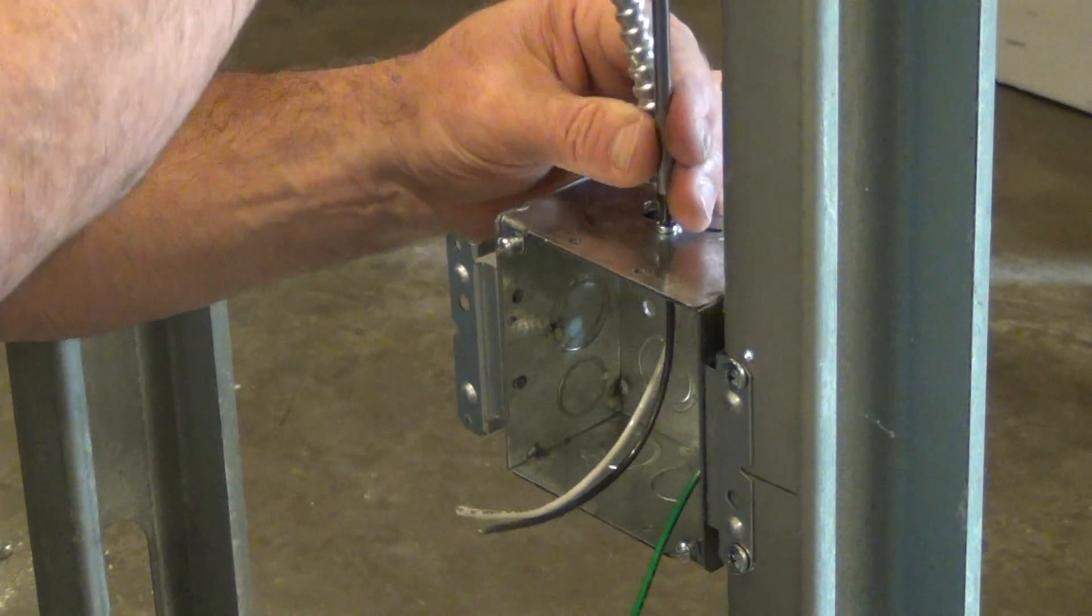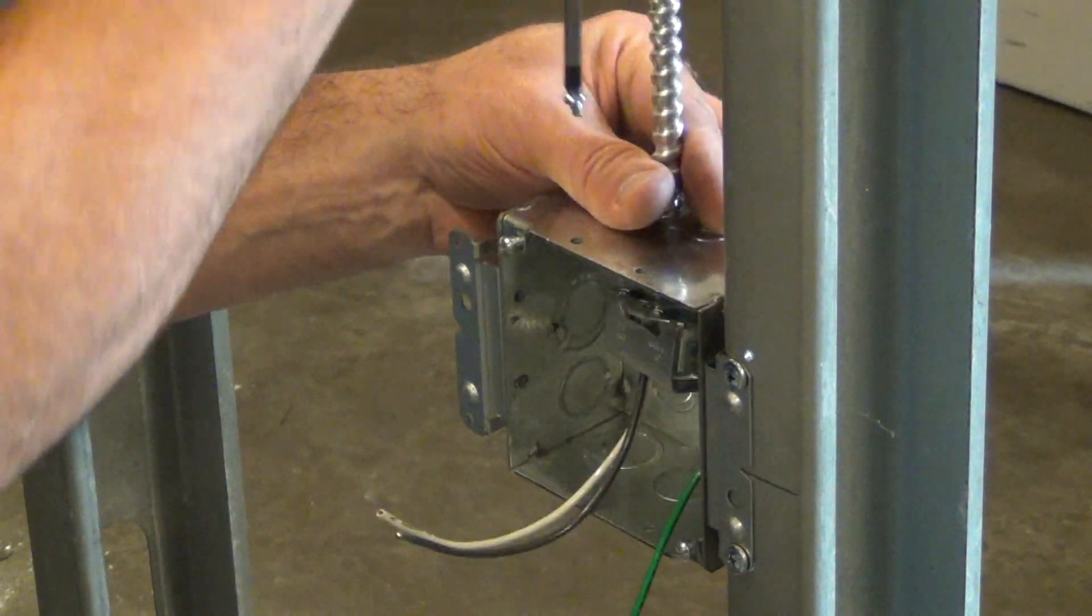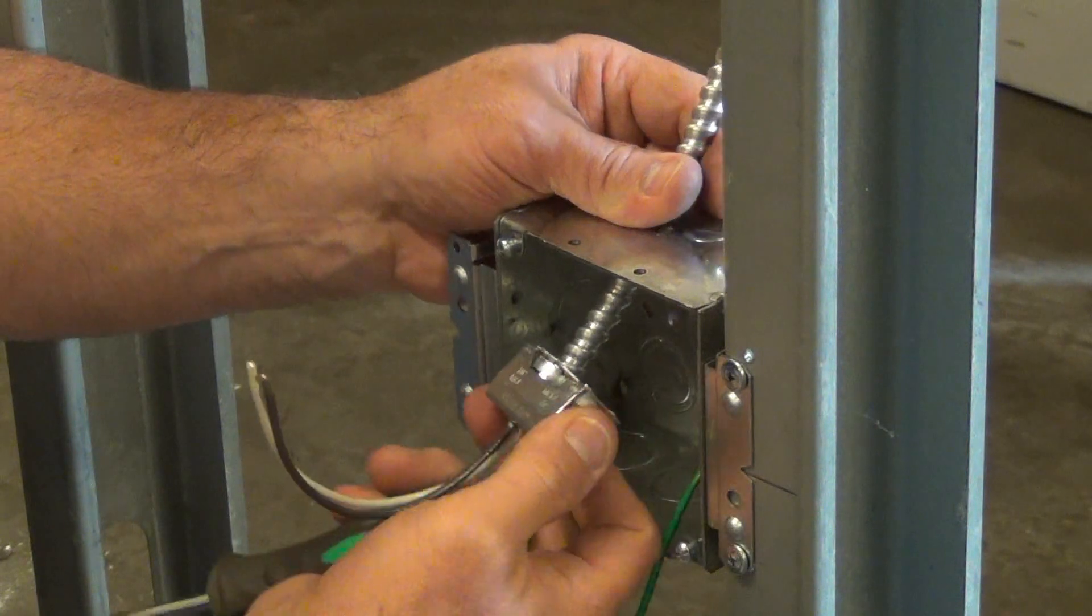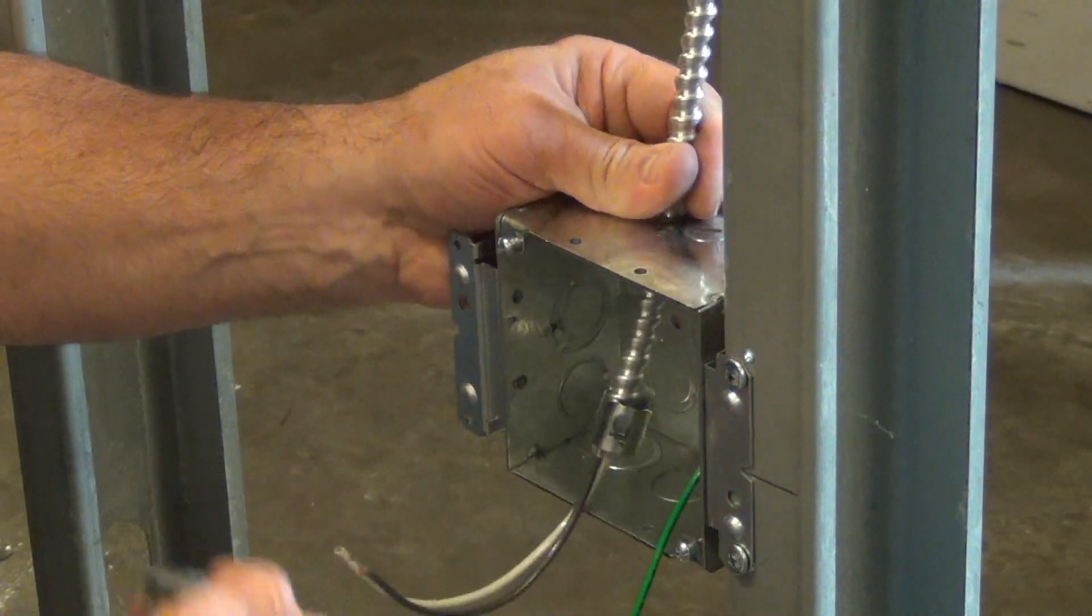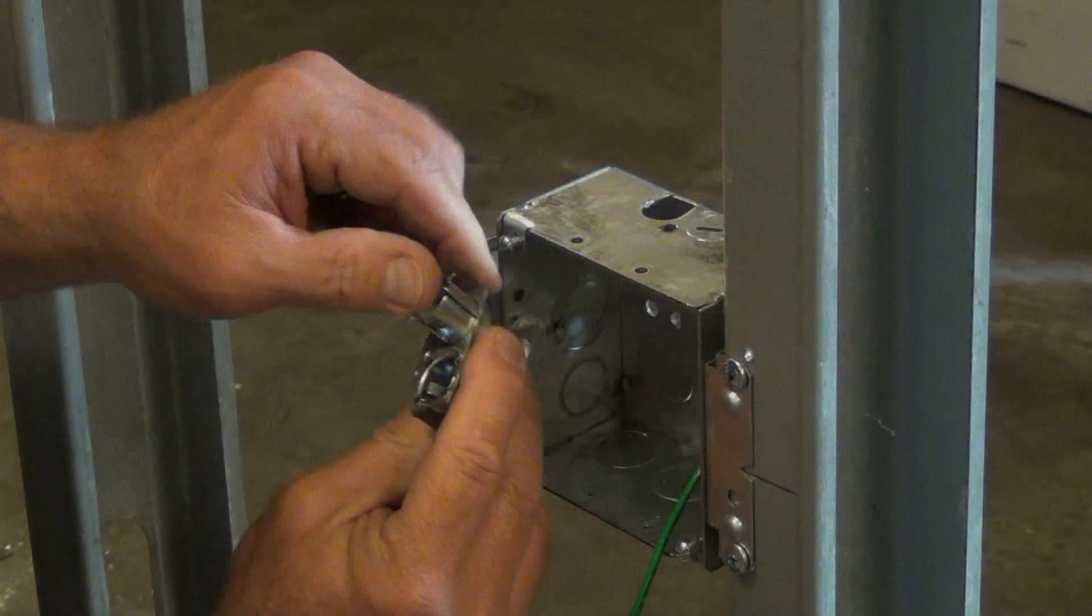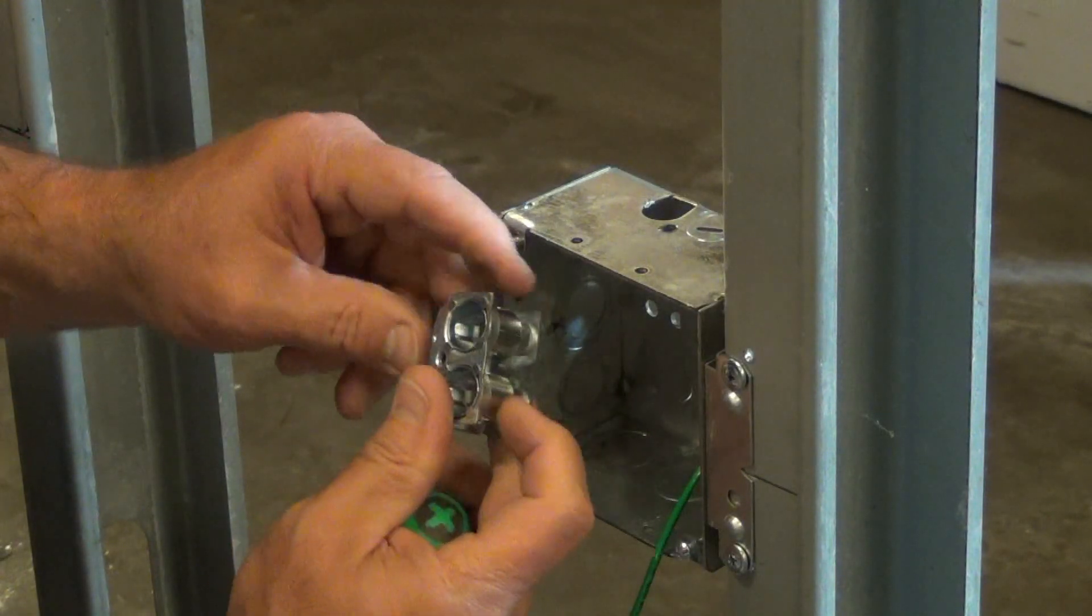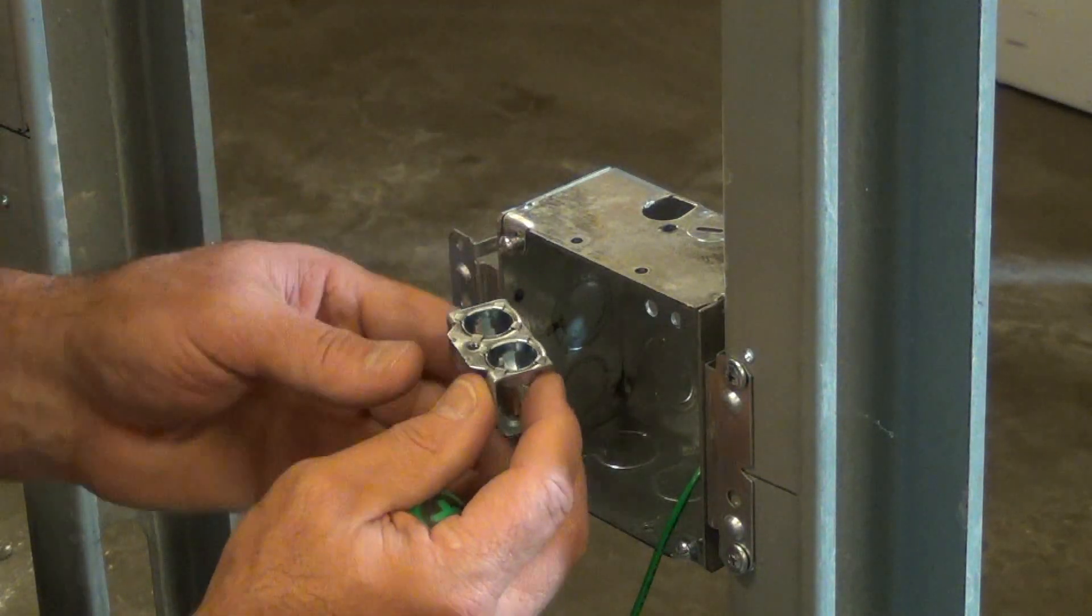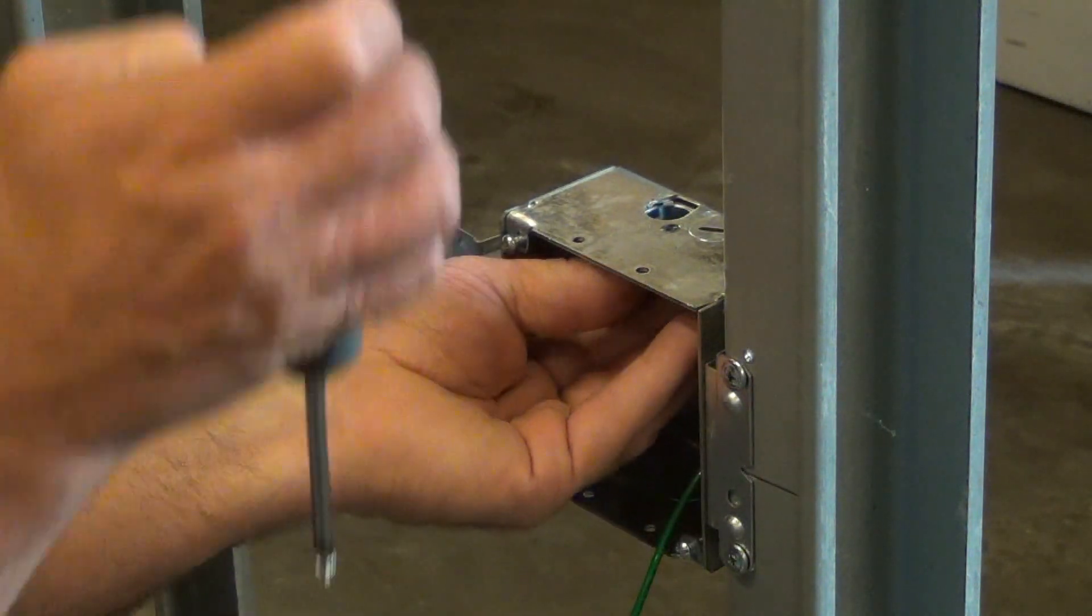In the event you need to back the cable out, simply back out the retaining screw to remove the Stabit connector. The two-piece design will come apart and you will be able to remove the inner spring from the cable. You can then press the inner spring back into the housing and assemble the connector back into the box.